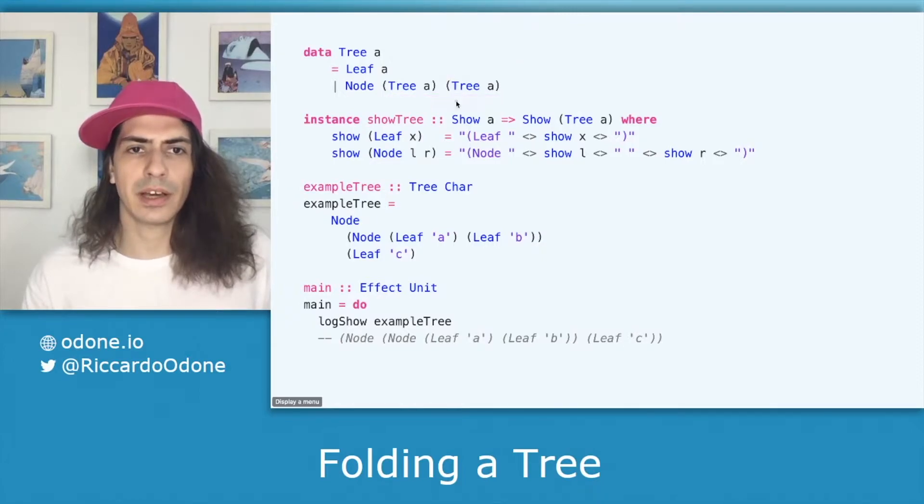Then we have an instance of show. Don't worry about this. It's just that in PureScript we need to name the instances, but the rest works as in Haskell. So we transform either the leaf or the node into a string representation.